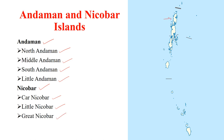This is North Andaman Island, and this one is Middle Andaman Island. Here is South Andaman Island and this one is Little Andaman. These are the four major islands in the Andaman group.